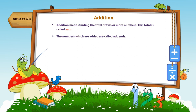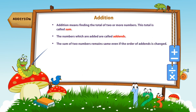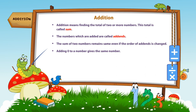The numbers which are added are called add-ins. The sum of two numbers remains the same even if the order of add-ins is changed. Adding zero to a number gives the same number.